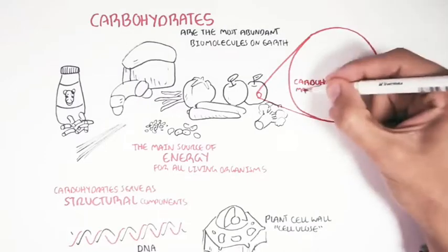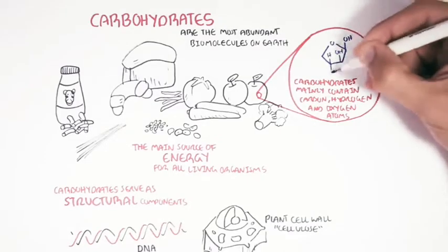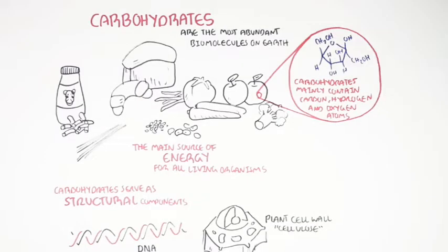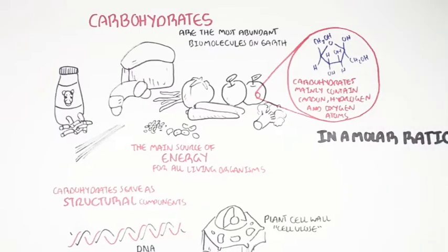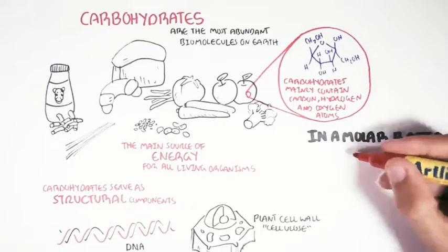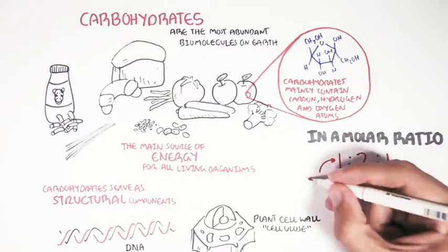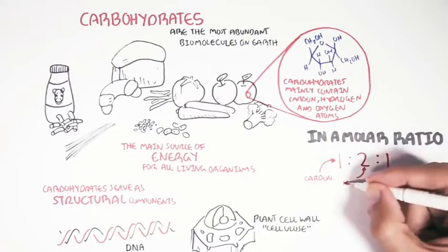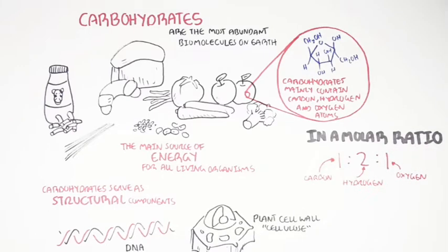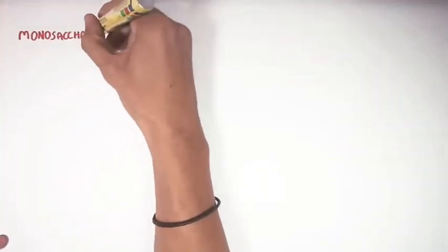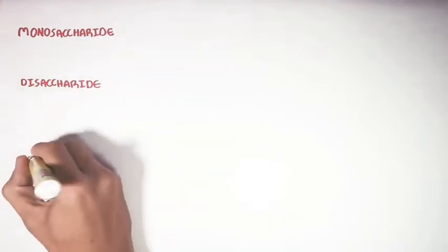Carbohydrates mainly contain carbon, hydrogen and oxygen atoms in a molar ratio of one to one — one carbon, two hydrogens and one oxygen. Carbohydrates can be divided into four types: monosaccharides, disaccharides, oligosaccharides and polysaccharides.